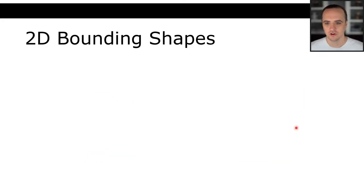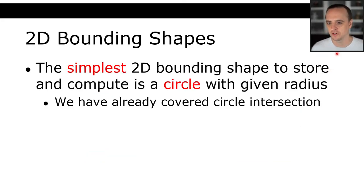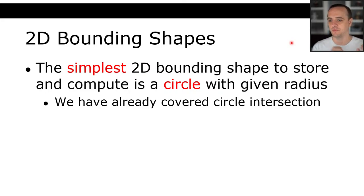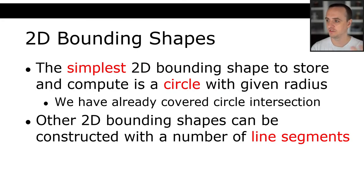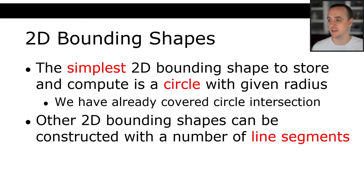The simplest 2D bounding shape to store and compute is a circle with a given radius. We've already covered circle-circle interactions in a previous lecture. If we talk about other 2D bounding shapes, pretty much any bounding shape can be constructed with a number of line segments. We can do the math to see if two line segments interact, and if any of the line segments interact, then those two shapes interact.